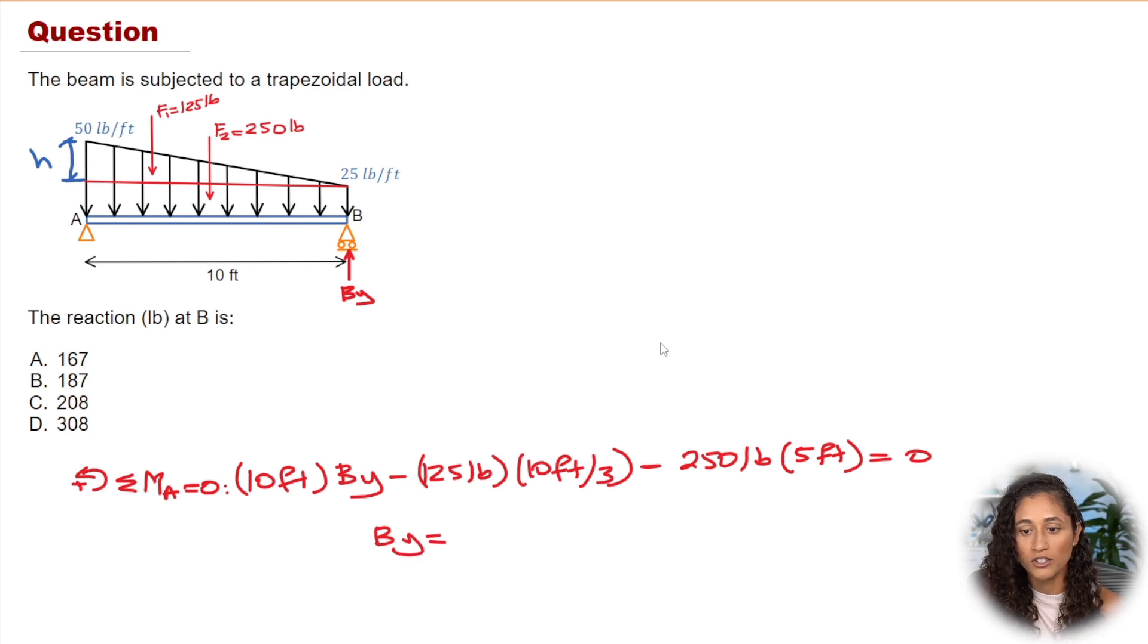So to solve for By, you're just going to take all these terms to the other side and then you're going to divide it by 10 feet. And if you do that, you are going to get 167 pounds. Now if we take a look at the multiple choice, the answer is going to be A.